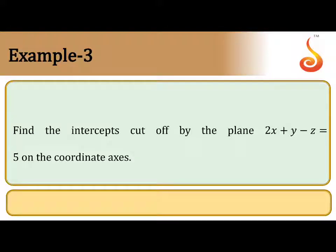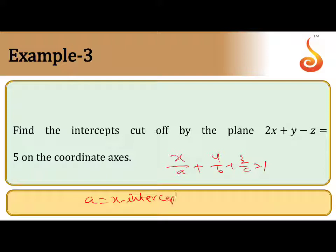Find the intercepts cut off by the plane 2x + y - z = 5 on the coordinate axes. We have the plane equation in intercept form: x/a + y/b + z/c = 1. Bring the equation into this form, then a, b, c are the intercepts of the plane.